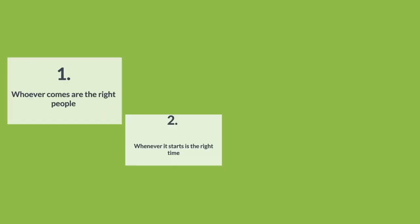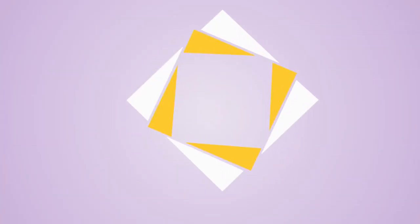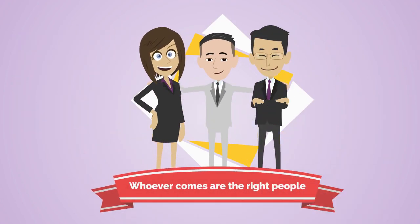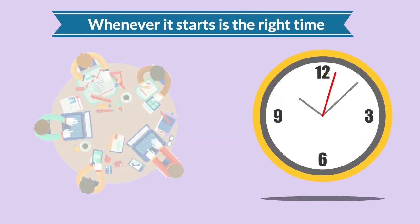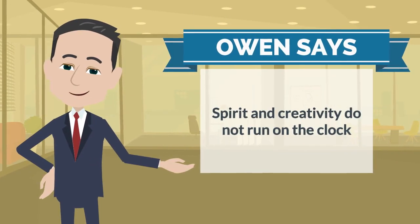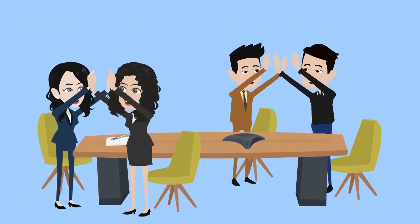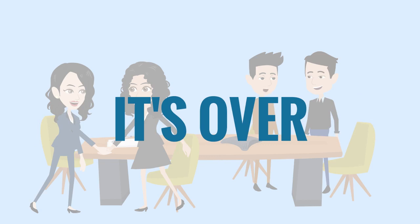It's pretty simple and comprised of just four principles and one law. The principles are: number one, whoever comes are the right people — basically the people who care will turn up. Number two, whenever it starts is the right time — as Owen says, spirit and creativity do not run on the clock. Number three, whatever happens is the only thing that could happen, and be prepared to be surprised. Number four, when it's over, it's over within this session.